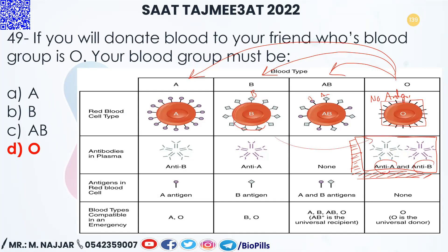Similarly, if blood group A donates to blood group O, the surface of the RBCs of blood group A has antigen A, which will coagulate with antibody A found in the plasma of the blood group O receiver. So the only accepted answer is blood group O, and now we know why.